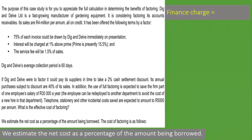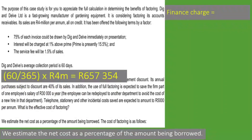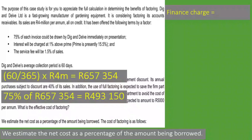We are told that 75% of each invoice could be drawn by Dick and Delft immediately. So we take 75% of 657,354 rand, which gives us 493,150 rand. This is the amount the factor could pay the company immediately, while the invoices are actually worth 657,354 rand — a 25% discount representing the factor's conditions.